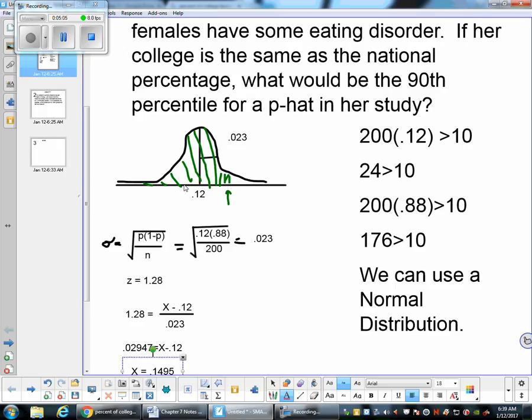The other way to do it is just do inverse norm 0.9 with a mean of 0.12 and a standard deviation of 0.023. But that's just plugging things in your calculator.